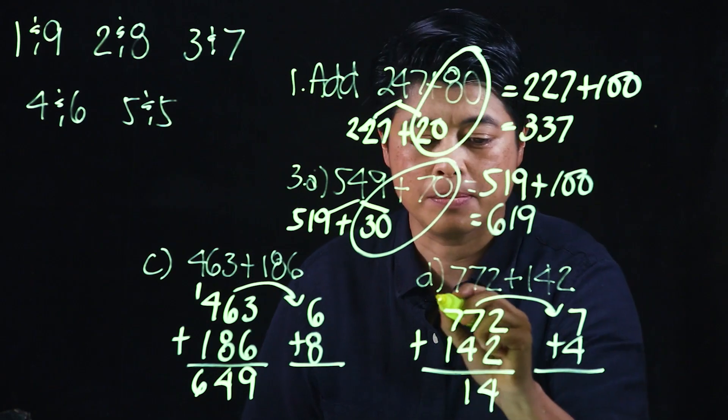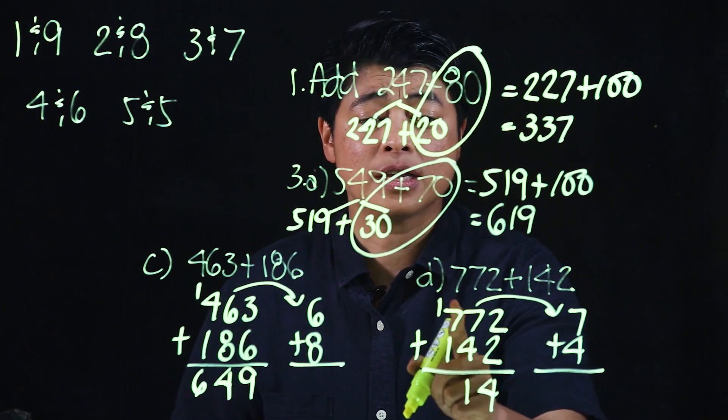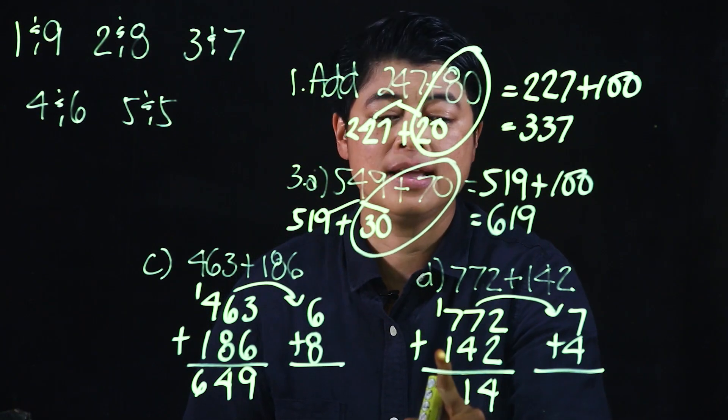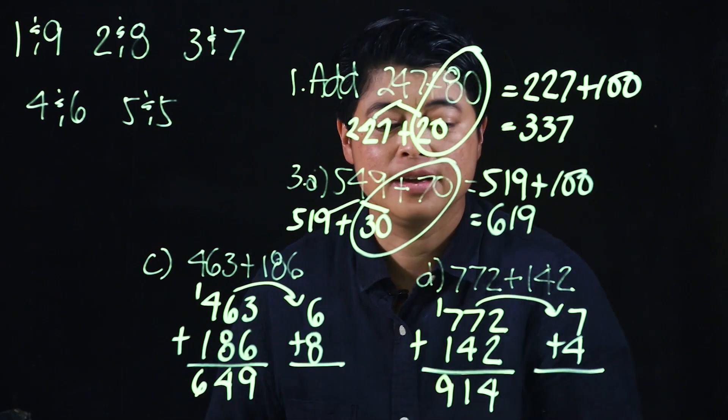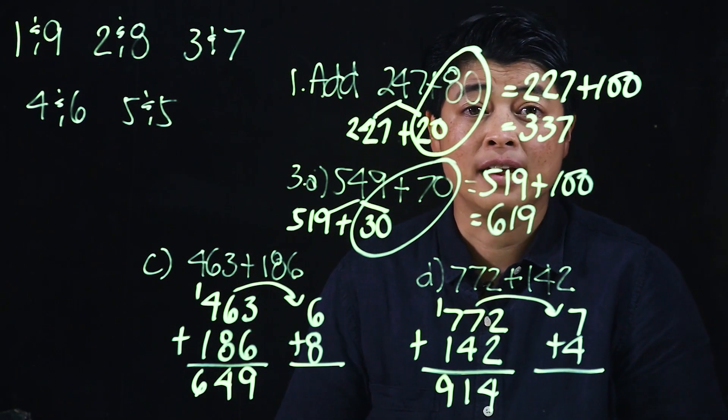So that would be 11. Starting with the bigger number, we add 8 plus 1 is 9, which makes it 914.